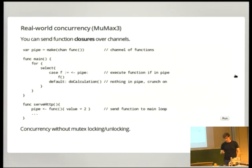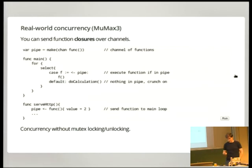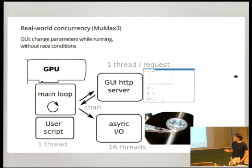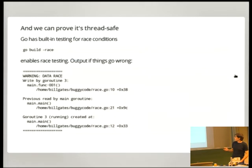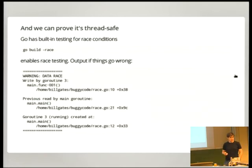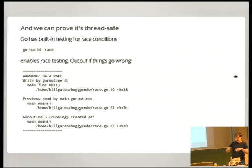If you somehow still manage to get race conditions despite the nice concurrency alternatives, Go also has built-in race testing. You just build your code with the race flag, and if you manage to do a simultaneous read and write of a variable, you'll get a nice report telling you that you messed things up.